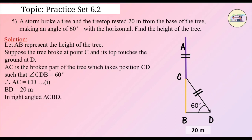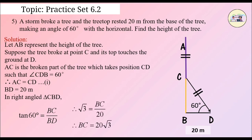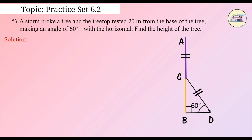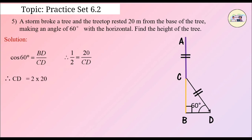In right angle triangle CBD, tan 60 degrees is equal to BC upon BD. Therefore, root 3 is equal to BC upon 20. Therefore, BC is equal to 20 root 3. Now, cos 60 degrees is equal to BD upon CD. Therefore, 1 upon 2 is equal to 20 upon CD. Therefore, CD is equal to 2 into 20, which is equal to 40. Therefore, AC is equal to 40.